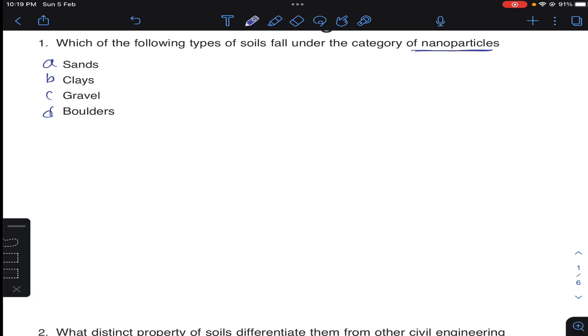So first you need to know: deci, centi, milli, micro, nano, pico, femto. So nanoparticles - it is 10 power minus 1, 10 power minus 2, 10 power minus 3, 10 power minus 6, 10 power minus 9.